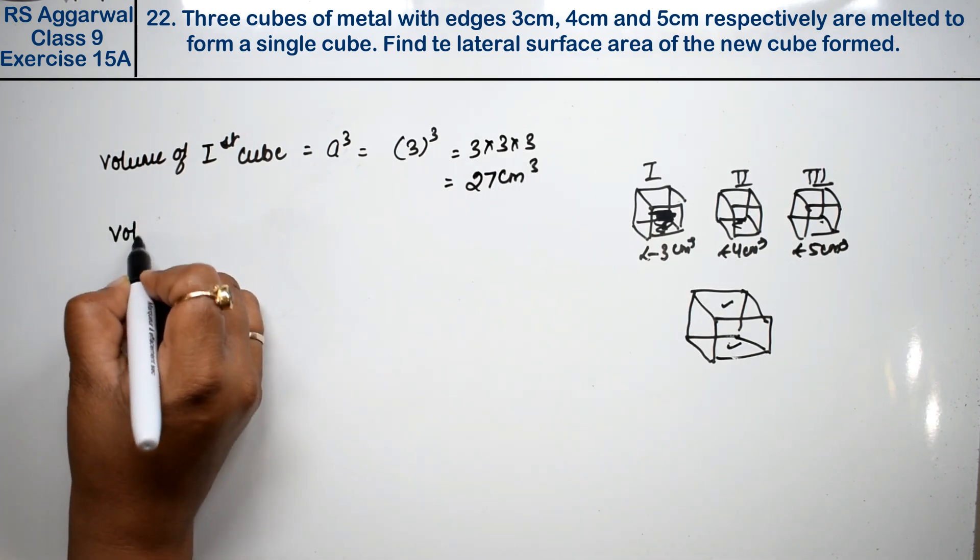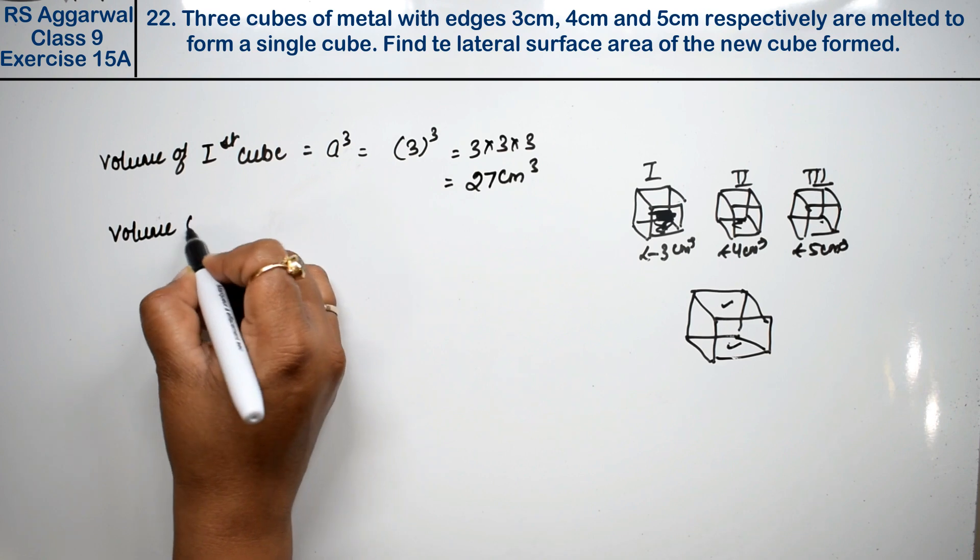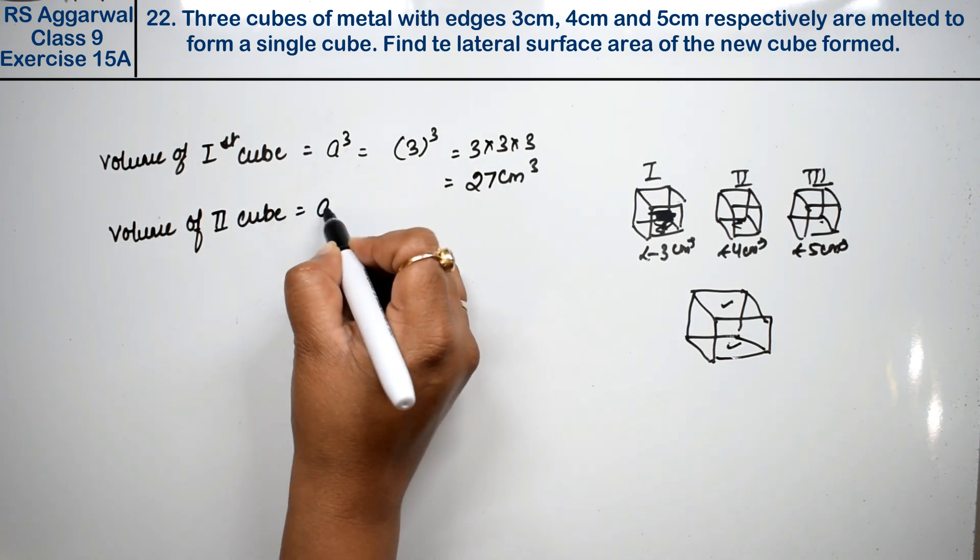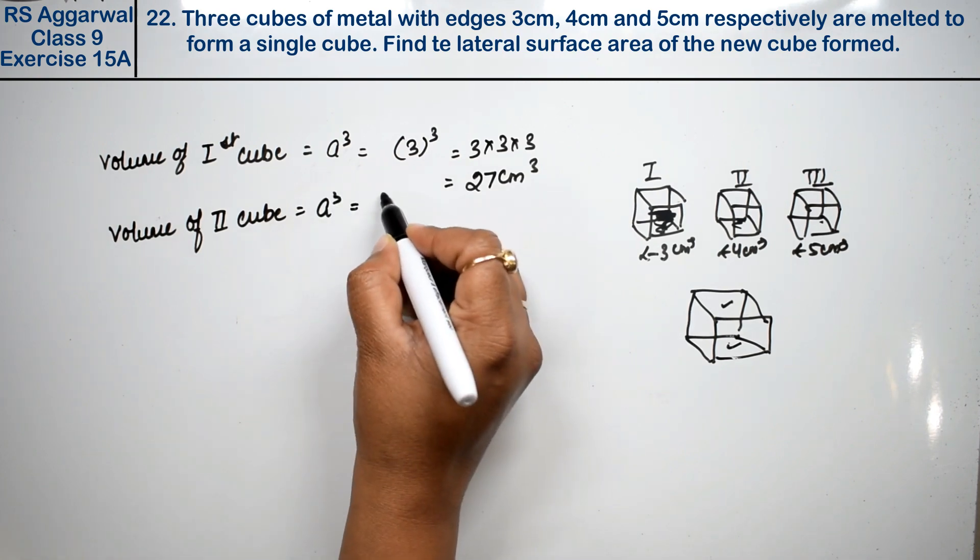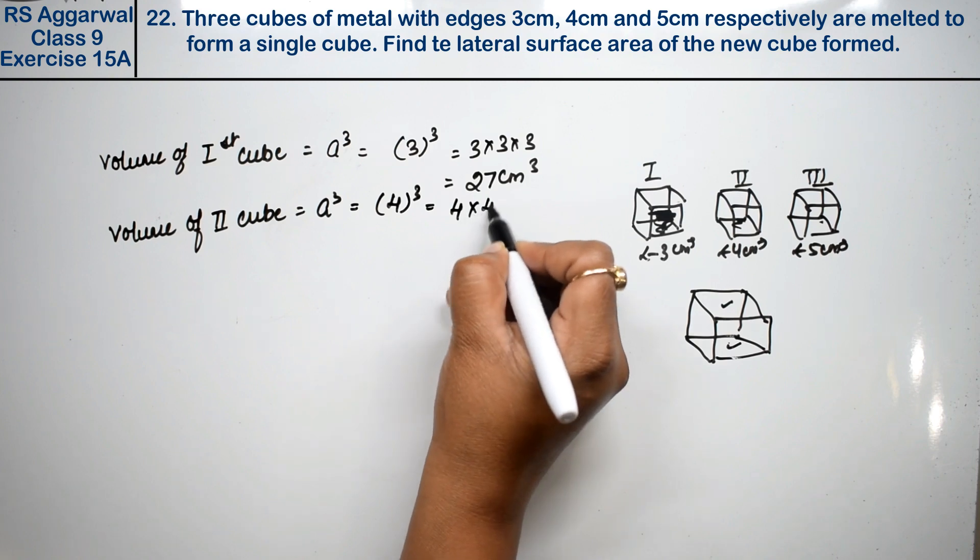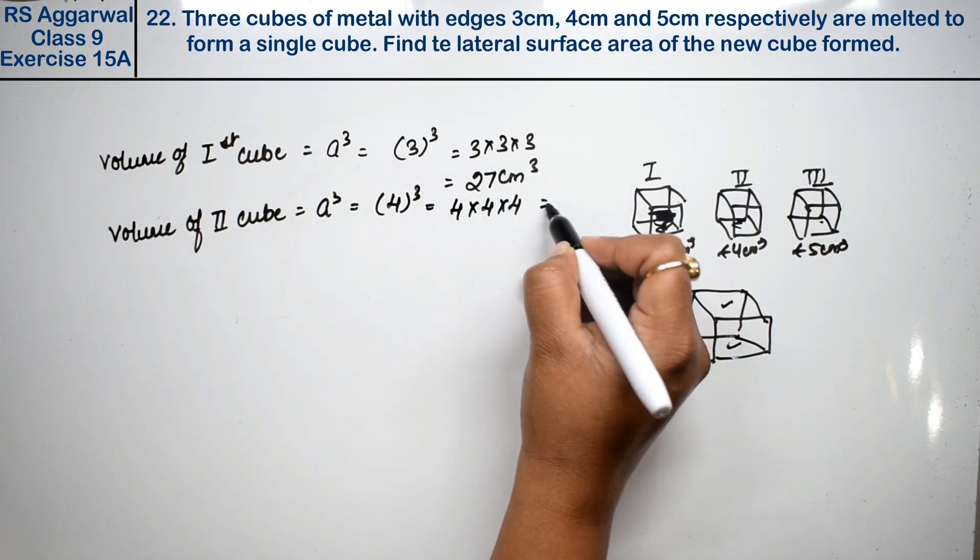Now volume of second cube. 4 into 4 into 4, that means 4 cubed, which is 64 cm cube.